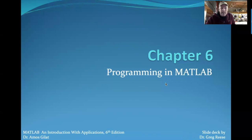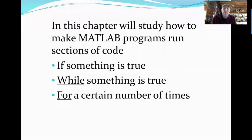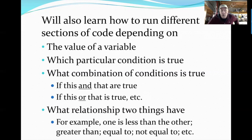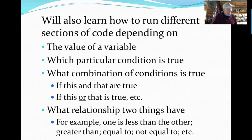Let's get started — chapter six. This chapter we'll study how to make MATLAB programs run. You want a program to say: if something happens, go do something else; or while something's happening, do this; or for a certain number of times, if this is true, do this. We'll also learn how to run different sections of code depending on the value of a variable — what particular condition is true, what combination of conditions are true.